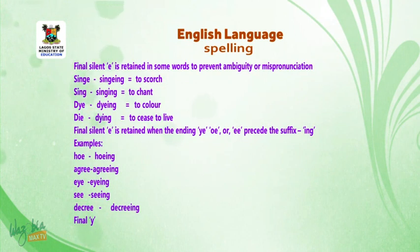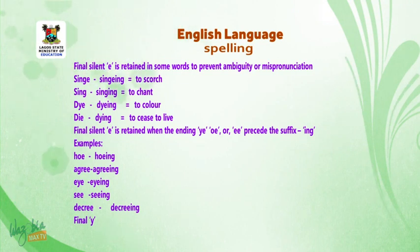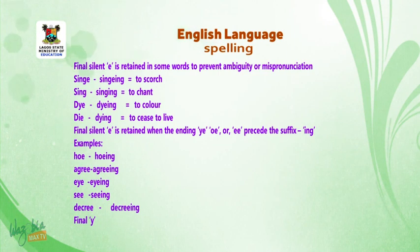Final silent E is retained in some words to prevent ambiguity or mispronunciation. For example: singe (to scorch) versus sing — singing (to chant); dye — dying (to color) versus die — dying (to cease, to leave).